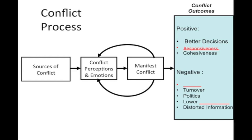Some of the positive outcomes of conflict are that it helps us improve our decision-making — we tend to have better decisions overall. It can strengthen team dynamics. Conflict in this set of outcomes should be aimed at the issue, not the parties. It helps recognize problems, identify solutions, and understand the issues even better. Positive outcomes result in better decisions, better responsiveness to the decision, and can even increase cohesiveness amongst the parties if conflict is focused on the issue, not on the parties themselves.